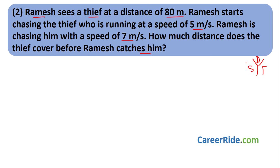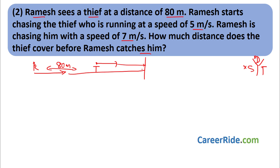Both Ramesh and the thief start at the same moment and stop when Ramesh catches the thief — so both run for the same amount of time. Time is the same. Using Time = Distance ÷ Speed from our DST: Distance traveled by Ramesh ÷ Speed of Ramesh = Distance traveled by Thief ÷ Speed of Thief. Ramesh's speed is 7 m/s and the thief's speed is 5 m/s.